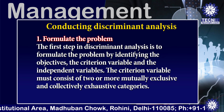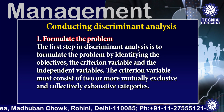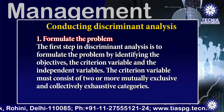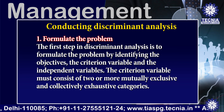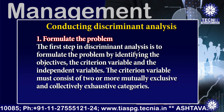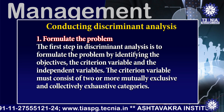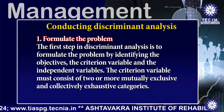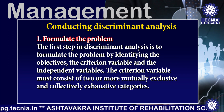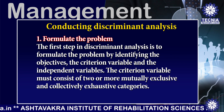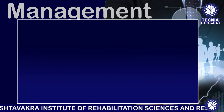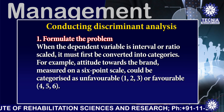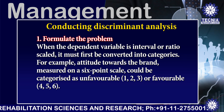The first step in discriminant analysis is to formulate the problem by identifying the objectives, the criterion variable, and the independent variables. The criterion variable must consist of two or more mutually exclusive and collectively exhaustive categories. When the dependent variable is interval or ratio scale, it must first be converted into categories.